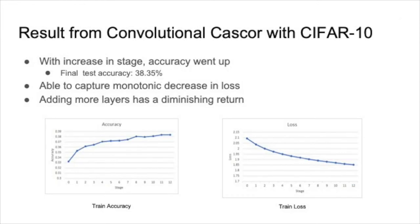And for our convolutional CASCOR network with the CIFAR-10 dataset, we were able to increase the accuracy as our stage increases. However, it wasn't a higher increase in accuracy with more layers. However, we were able to reach monotonic decrease on the loss with the increase in stage.